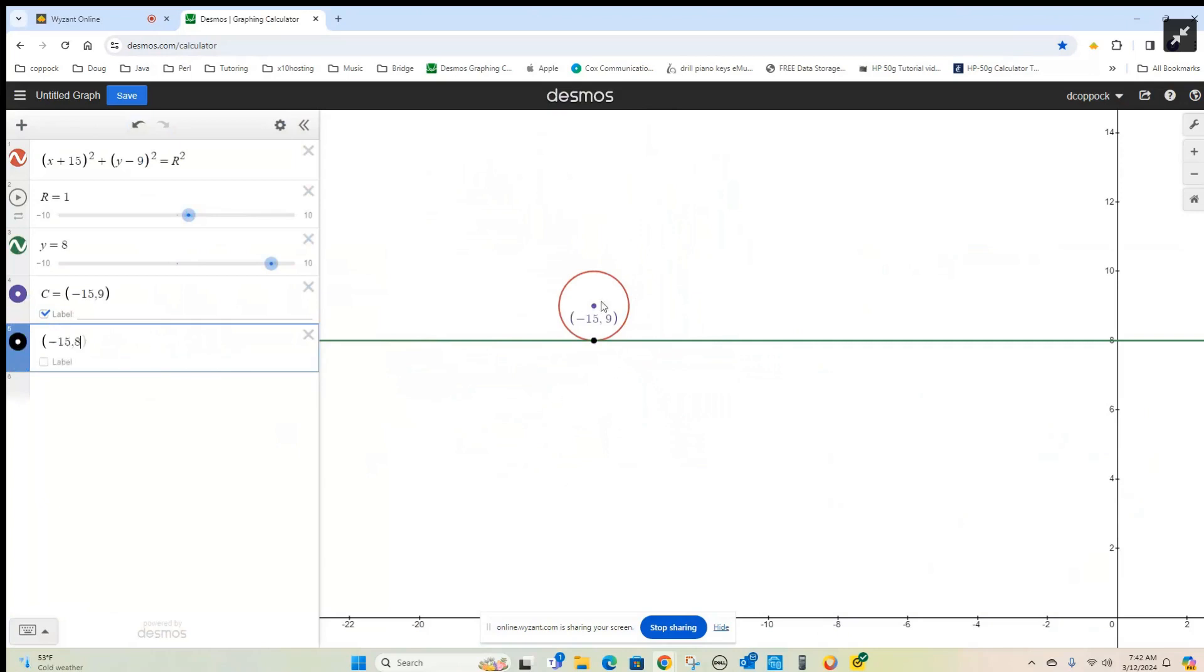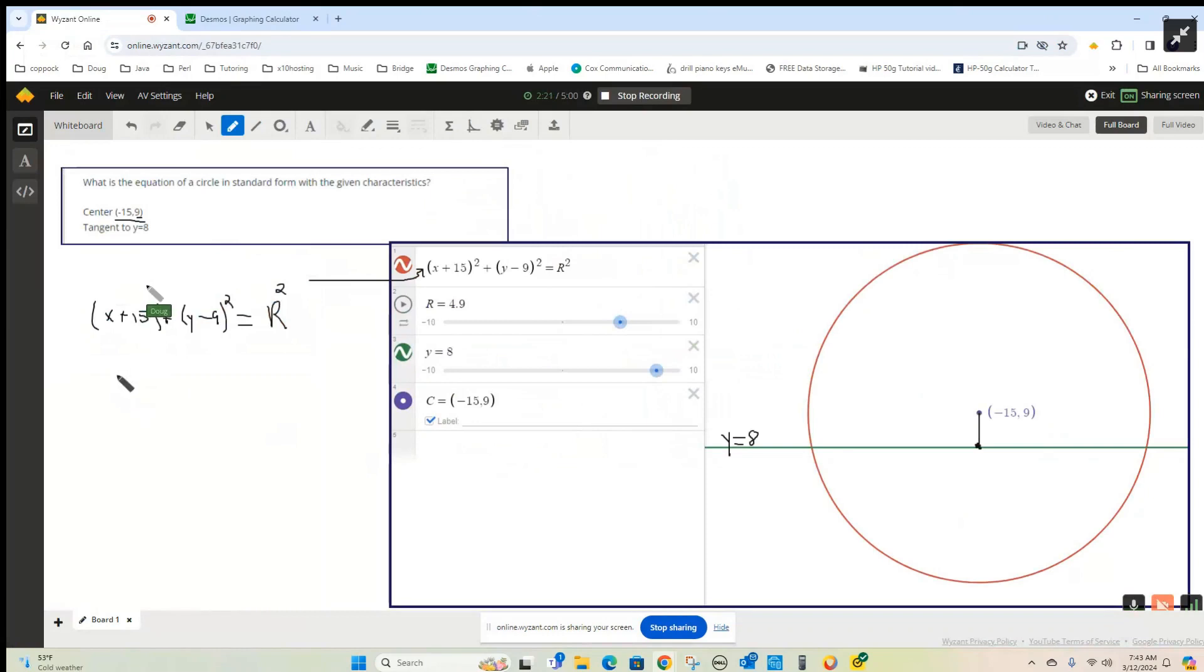And the distance from this point to this point is just one unit from 8 up to 9. 9 minus 8 is 1. So we change it. There, r is 1. So there's your equation right there with replacing r squared with 1.